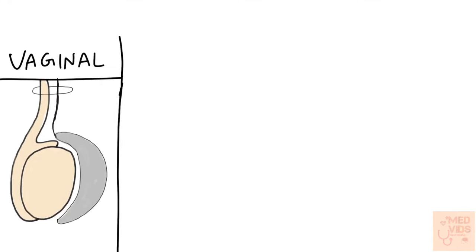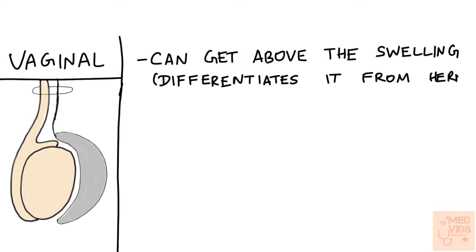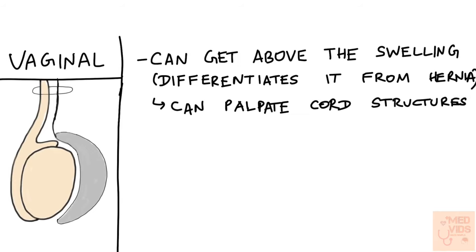Now let us see some features of vaginal hydrocele. The first point is that you can get above the swelling in case of hydrocele, which means you can palpate the spermatic cord structures separately above the swelling, because the swelling is present just inside the scrotum. This helps differentiate it from inguinal hernia, because in inguinal hernia it is an inguinoscrotal swelling — you won't be able to feel the spermatic cord structures separately at the root of the scrotum, as the swelling arises from within the inguinal canal and descends into the scrotum.